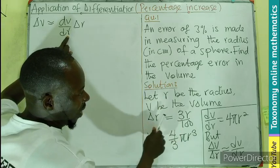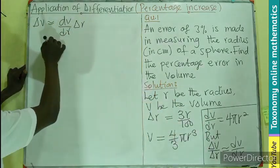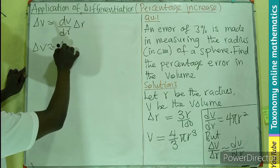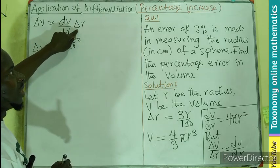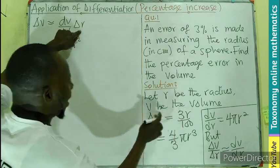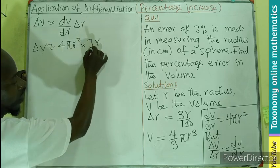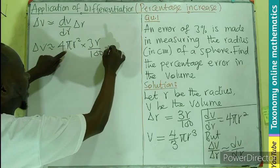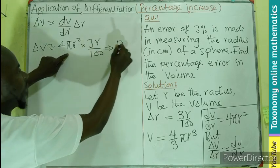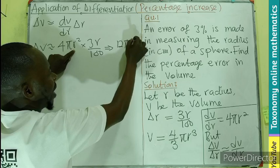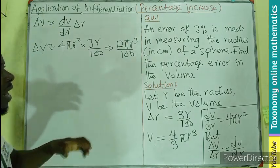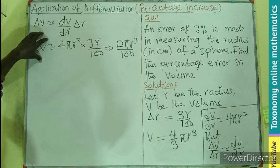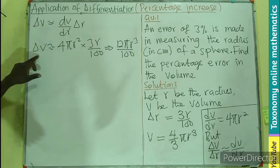So from here, making delta V the subject, that will be approximately dV/dr times delta r. So going back into all the information we have, delta V is 4 pi r squared times delta r, and delta r is 3r divided by 100. And I believe this will be multiplying. So that will mean I will have 12 pi r cubed divided by 100. So now we know the small change.